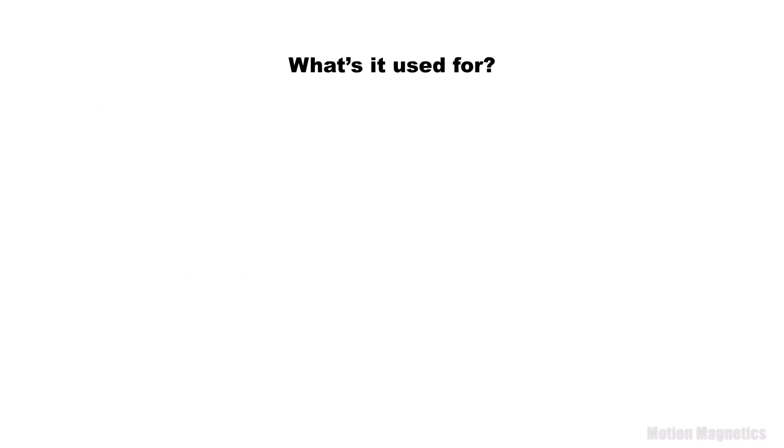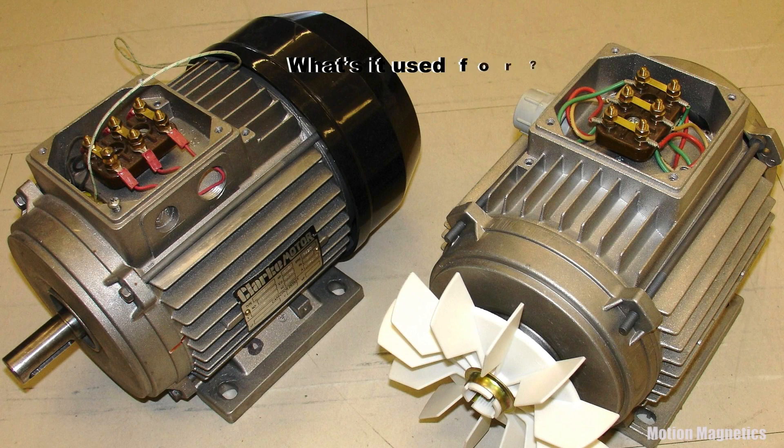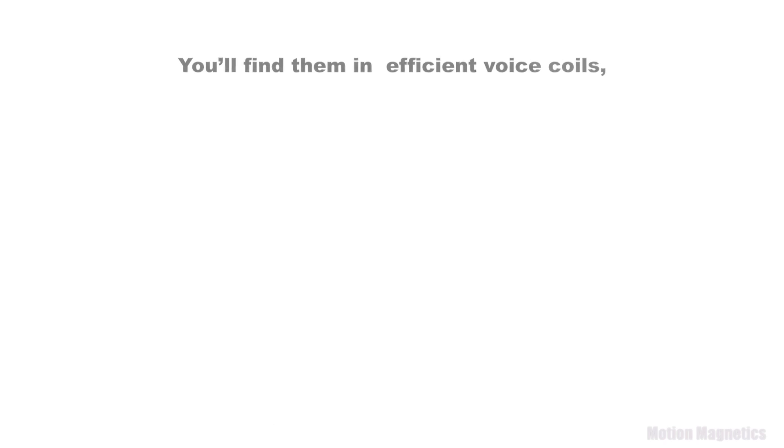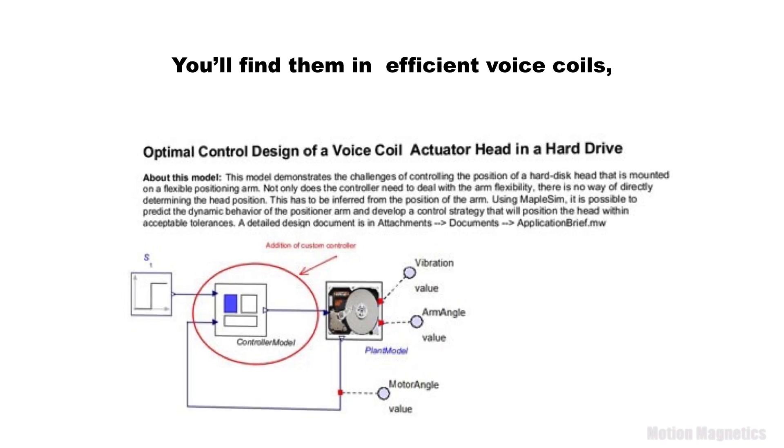What's it used for? Halbach Arrays are used for brushless AC motors and magnetic coupling. You'll find them in efficient voice coils.